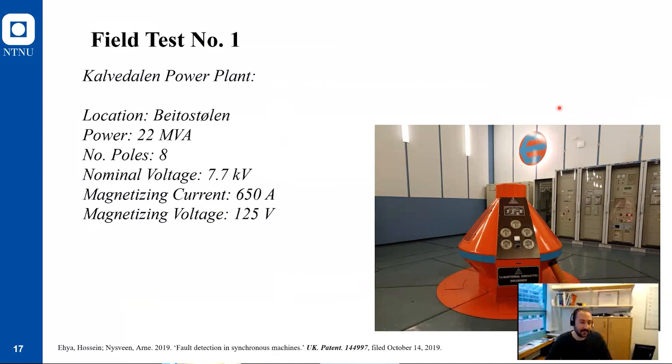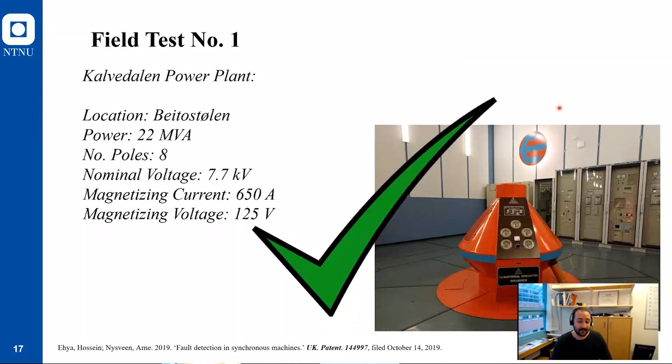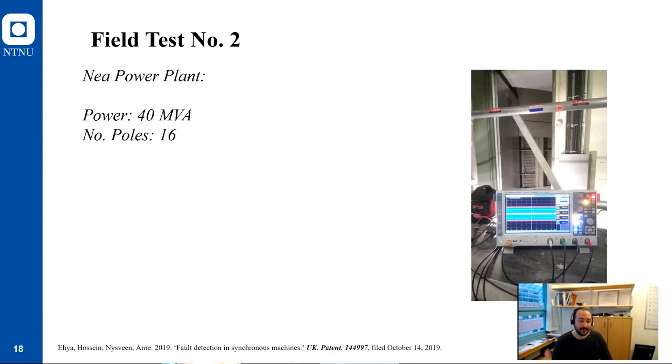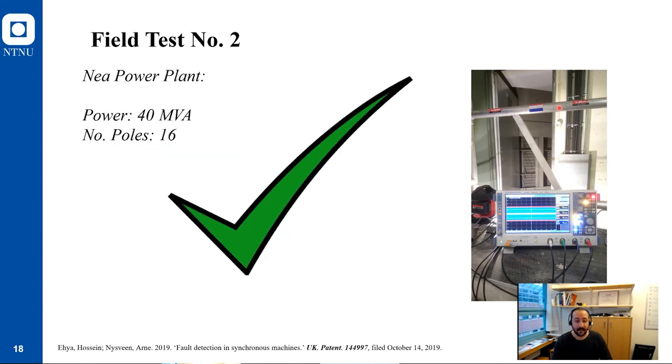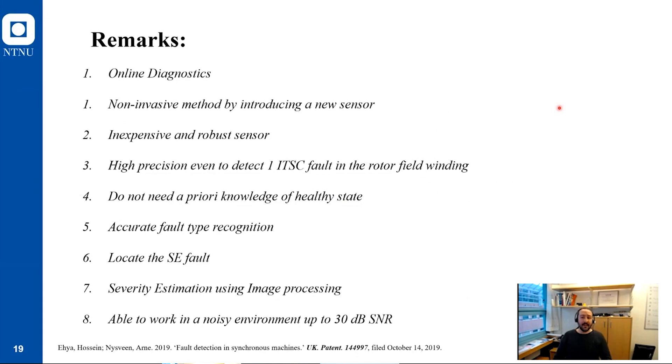We had a chance to perform a test in the Calvodal power plant. It's a 22 megavolt ampere synchronous generator. It has eight poles, but this power plant only has one unit. We performed the test. We installed the sensor. It was really quick measurements. We performed all the measurements in less than one hour. After we analyzed the data, we were able to detect the fault in this machine. This field test also worked well. It means the idea is working in a real power plant. But as I mentioned, this power plant only has one unit. Maybe if you're in a power plant with more than one unit, the noise from those could interfere with results. We performed the test in another power plant with different topology with four units, and we were able to detect the fault in this power plant as well.